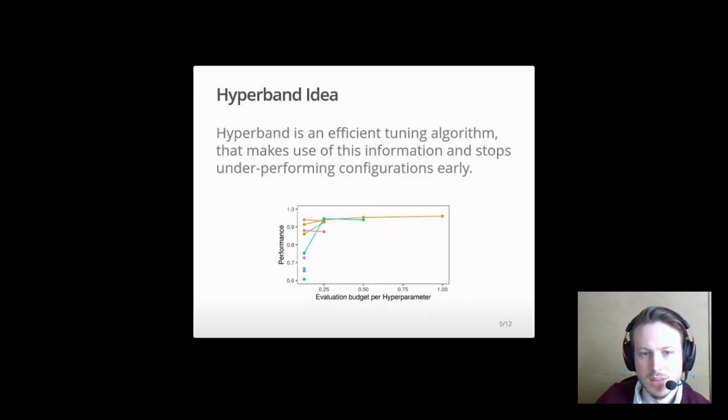For this, hyperband steps in as an efficient tuning algorithm that makes use of information of low budget evaluations and stops underperforming configurations early.